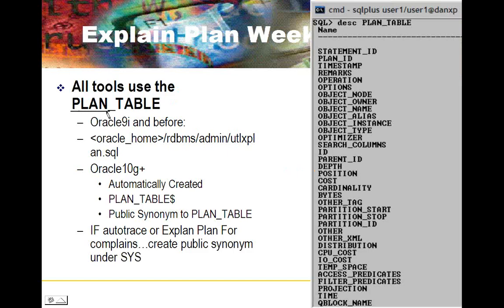All of the tools use the plan table to format their explain plans and execution plans — I use the terms synonymously. Technically the execution plan is the binary source of how Oracle will execute things; the explain plan is the English version of that. Oracle 9 and before, we ran a script — people forgot to run it and would be missing newer information. Oracle 10 introduced a virtual table, plan_table$, owned by SYS with a synonym. Oracle 11 and 12 have this. Just make sure you don't have a plan_table in your current schema, because tools look there first.